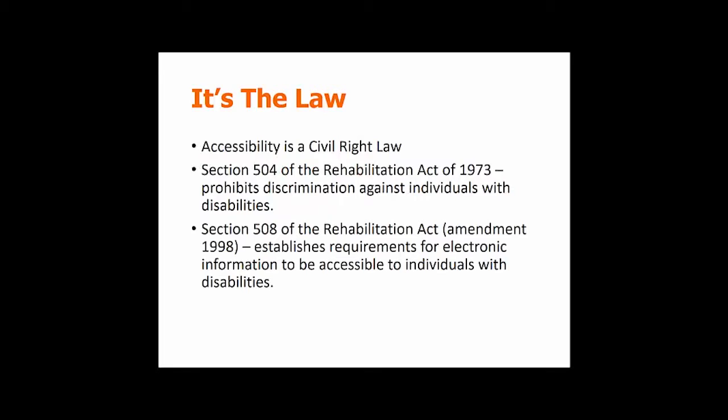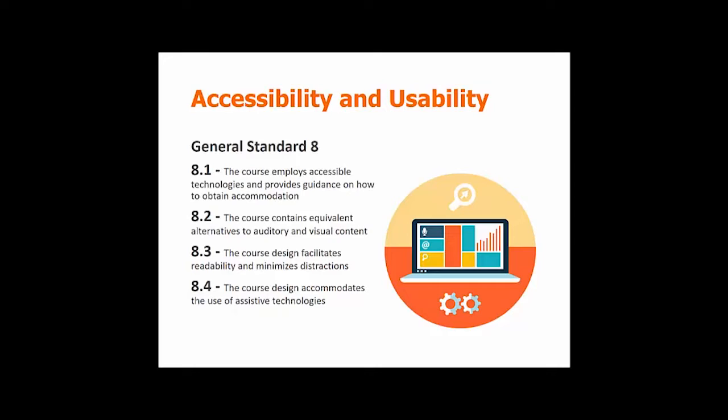We often answer questions from faculty such as, why do I have to make my course accessible if I don't have a student who currently needs an accommodation? The simple and short answer is, it's the law. Remember, accessibility is a civil rights law that involves Section 504 and 508. In particular, Section 508 of the Rehabilitation Act establishes requirements for electronic information to be accessible to individuals with disabilities.